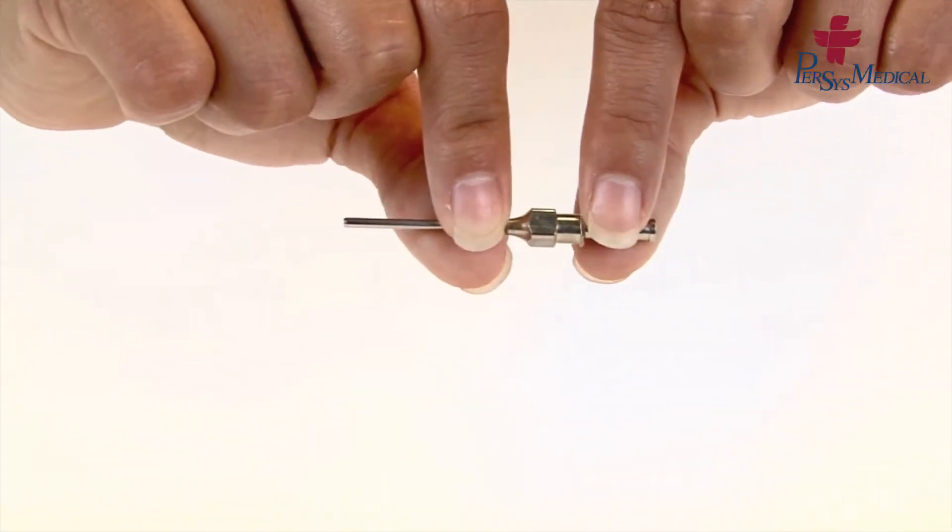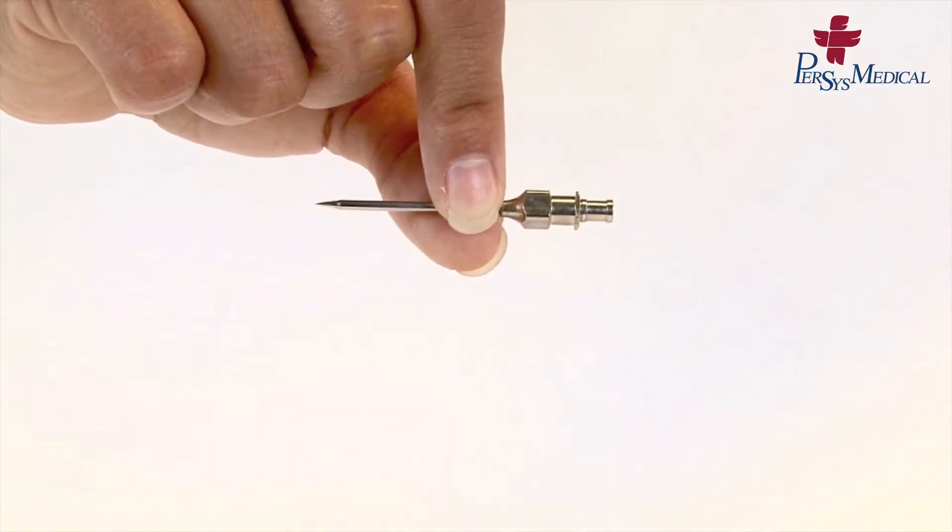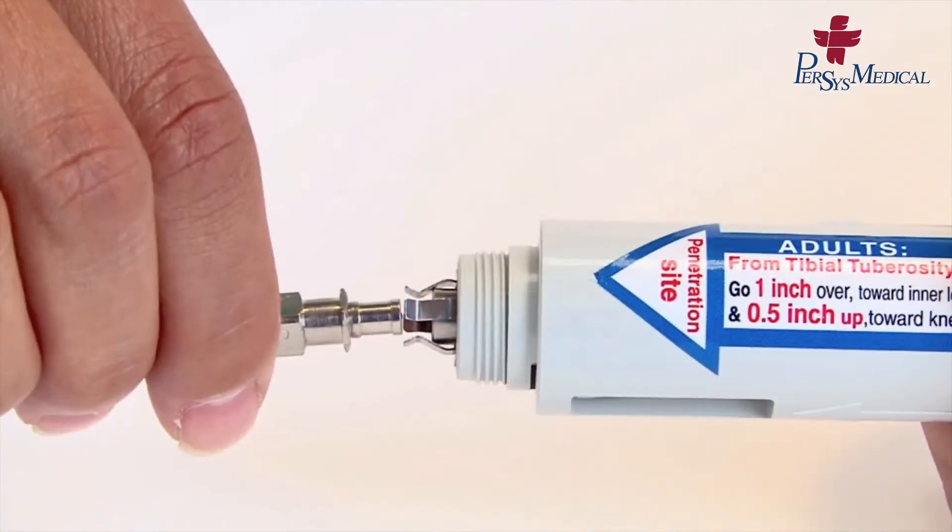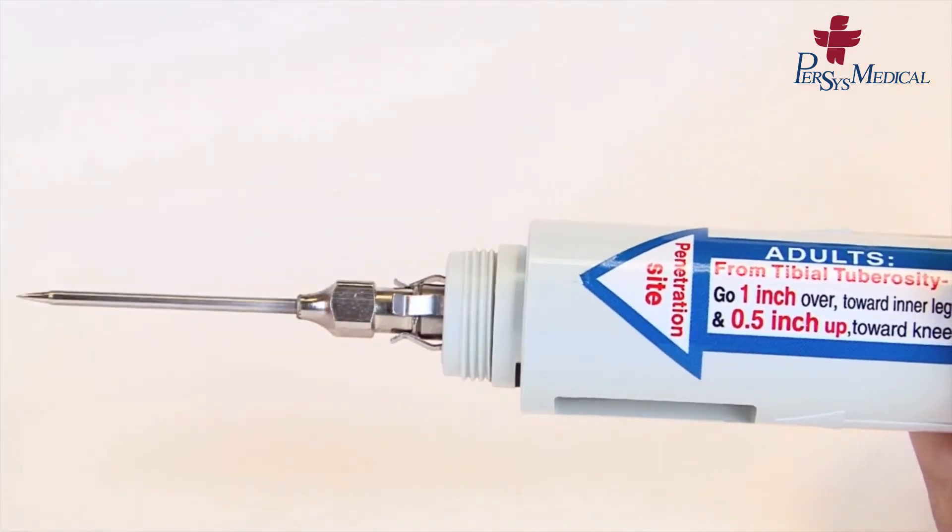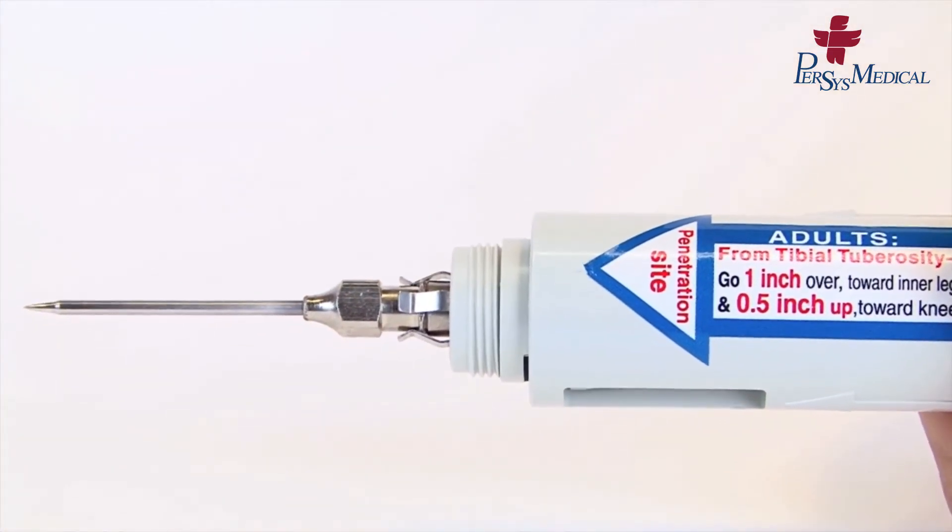Carefully place the needle into the cannula. Keeping the spring and piston pointed away from you, attach the needle and cannula to the clasp and ensure that it is secured.